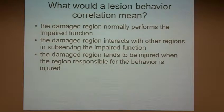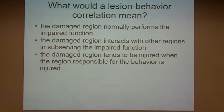The third possibility is that the damaged region tends to be injured when the region responsible for the behavior is injured — for example, because they're near each other. This often causes problems because strokes, especially, tend to be large.